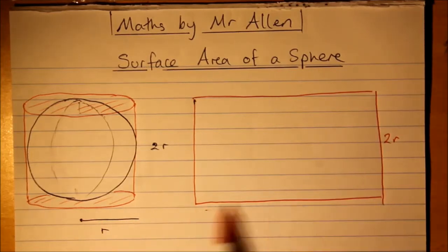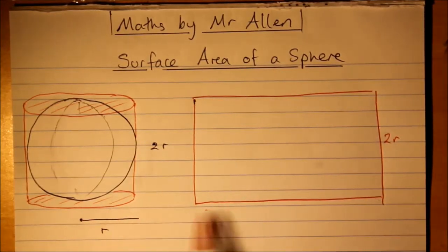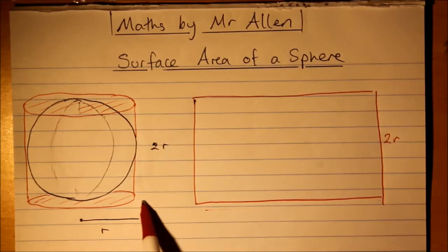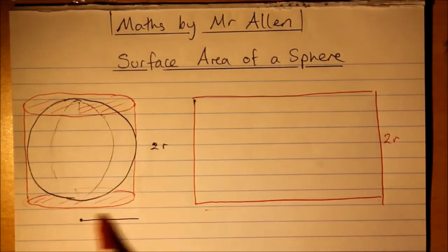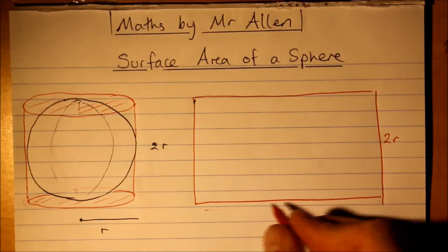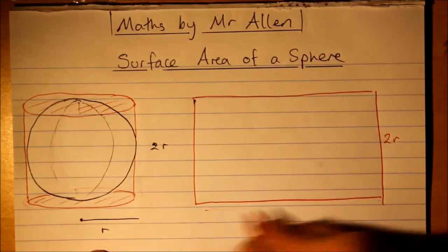And what is this dimension if you think back? Well, it wraps nicely around that circle at the base. So it's the circumference of a circle with r, so 2πr.